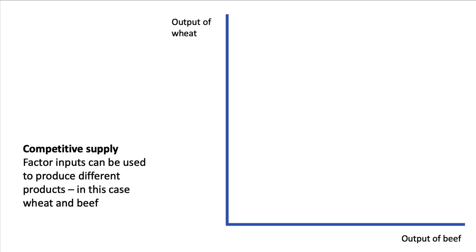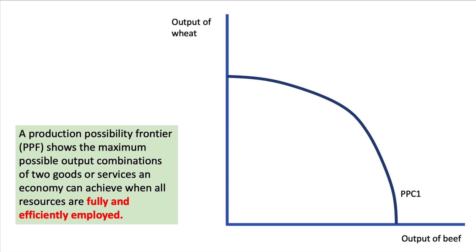Let's think about a simple PPF producing between wheat and beef. The PPF shows the maximum possible output combinations. Factor inputs can be used to produce different products — in this case, wheat and beef. Here's our initial PPF, or PPC: it's the maximum of those two products, wheat and beef, that you can produce with full and efficient utilisation of resources.